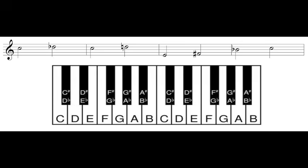A whole step is bigger than a half step — a whole step has two half steps inside it. We can see that C to D is going to be a whole step. It has two half steps inside it: the half step from C to C sharp, and another half step from C sharp to D. If we look at our next interval, from E to F sharp, E to F natural is a half step with no keys in between, and F to F sharp is another half step. That means E to F sharp is a whole step, because there are two half steps inside it.